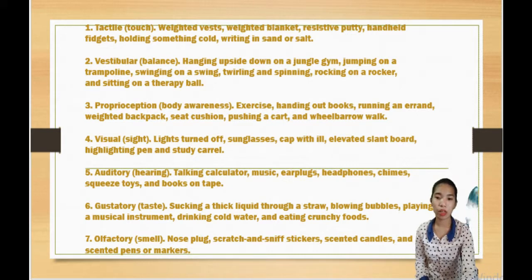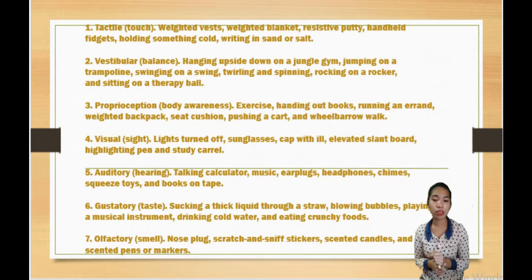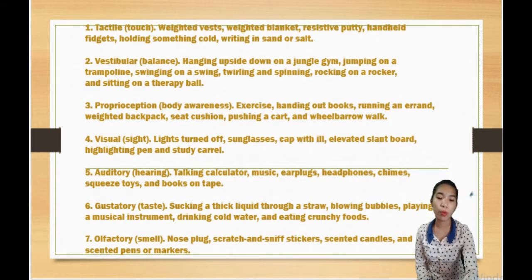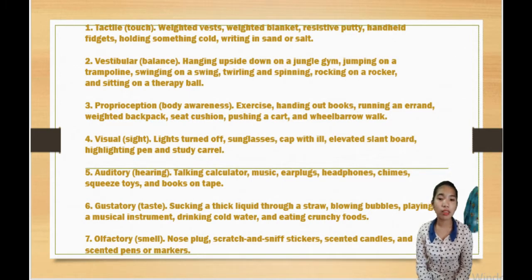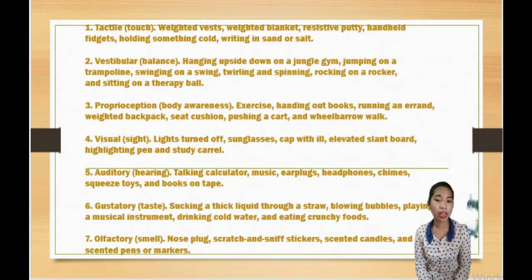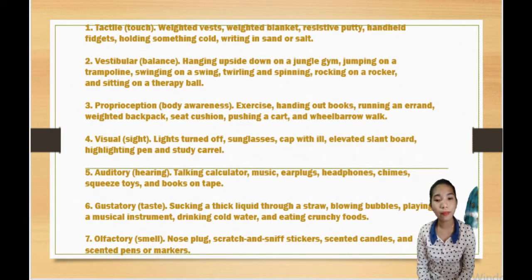Number three is proprioception, or body awareness. Examples include exercise, handing out boots, running errands, weighted backpack, seat cushions, pushing a cart, and wheelbarrow walks. Fourth is visual, or sight. Examples include turning off lights, sunglasses, a cup with heels elevated, a slant board, highlighting pen, and a study carrel. Fifth is auditory, or hearing. Examples include a talking calculator, music, earplugs, headphones, squeeze toys, and books on tape.